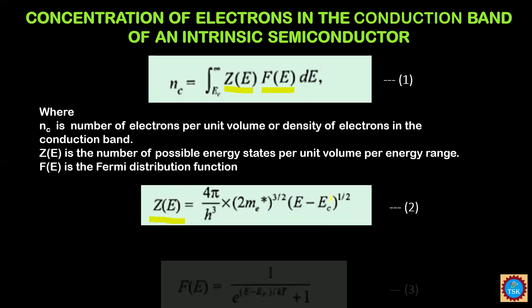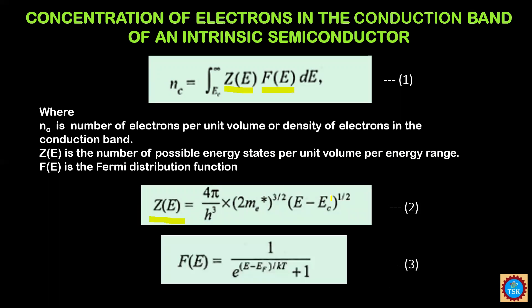The Fermi distribution function F(E) is equal to 1 / (e^((E − EF)/kT) + 1). This is equation number 3. Now we substitute equations 2 and 3 into equation number 1.